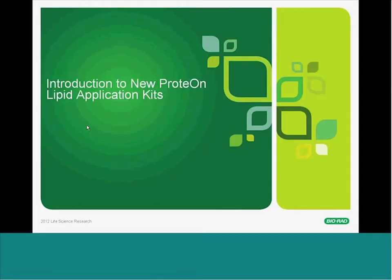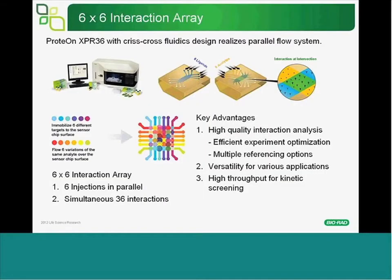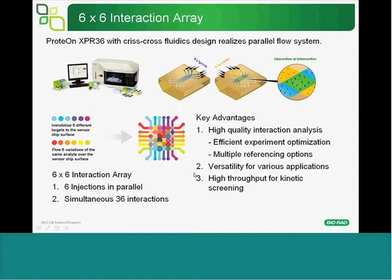As an SPR platform for label-free biomolecular interaction analysis, Proteon employs an advanced criss-cross fluidic system with six vertical channels for ligand immobilization and six horizontal channels for analyte injection. Proteon is able to analyze 36 interactions in a single run using just a single sensor chip. By doing the six-by-six interaction array, it provides an efficient approach for experiment optimization and multiple referencing options which can increase data quality, as well as versatility for experiment design such as screening or characterization of biomolecular interactions.